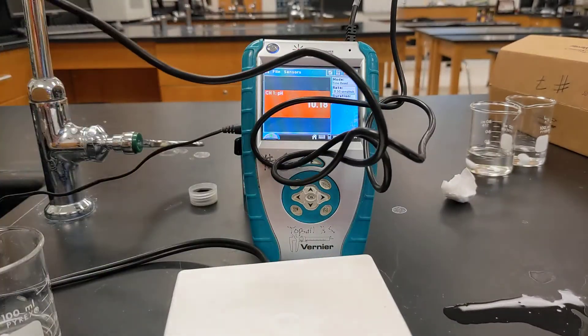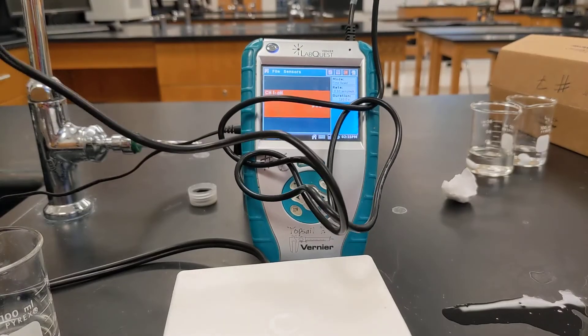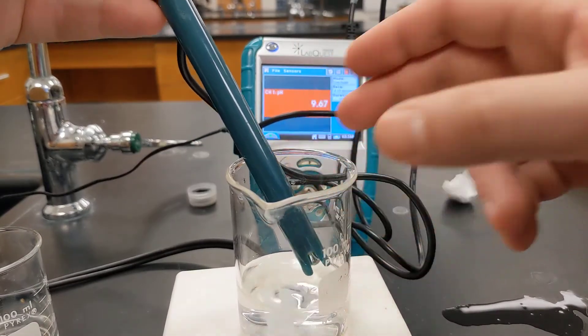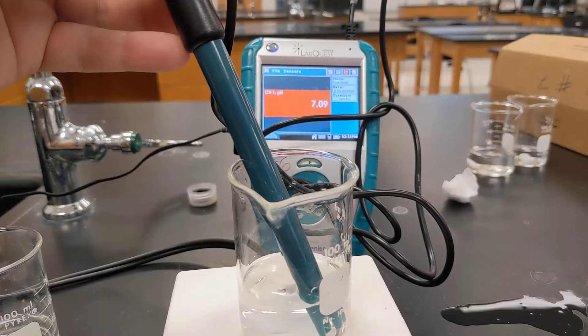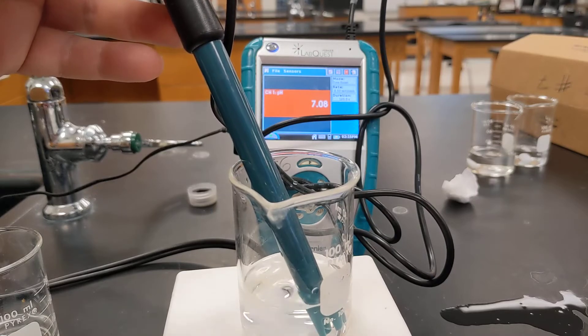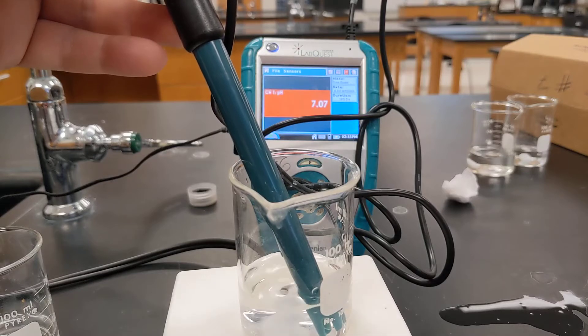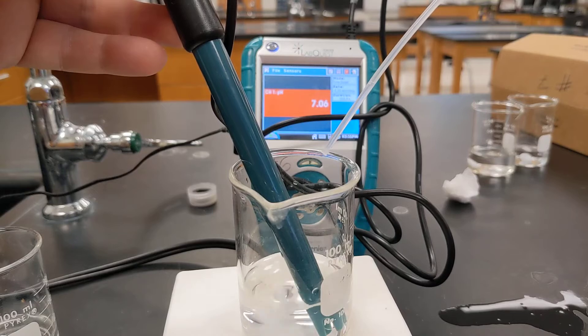Now, what if instead we use a buffer solution? So I have right now a buffer solution here. This consists of sodium hydrogen phosphate and sodium dihydrogen phosphate, which makes a nice buffer solution with a pH of seven. So if I add some hydrochloric acid, let's see what happens. I add a drop.